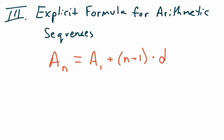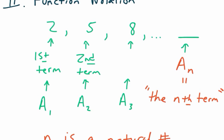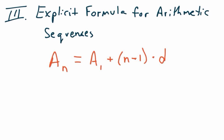Going back to the last example — the sequence 2, 5, 8 where we're adding 3 each time — the 3 goes in for D because it's the common difference. The sequence starts with 2, so A sub 1 is 2. That gives us the formula for that sequence.